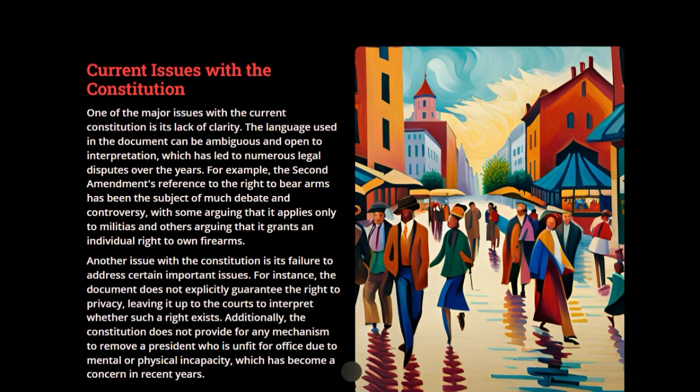Now, current issues with the constitution. One of the major issues is lack of clarity. The language used in the document can be ambiguous and open to interpretation, which has led to numerous legal disputes over the years. For example, the Second Amendment regarding the right to bear arms has been the subject of much debate and controversy, with some arguing that it applies only to militias and others arguing that it grants an individual right to own firearms.